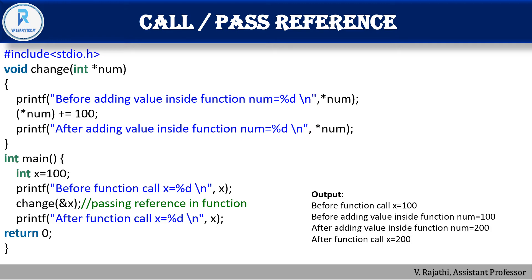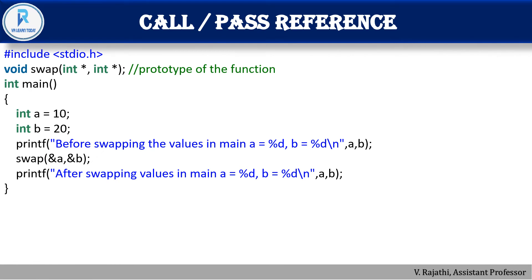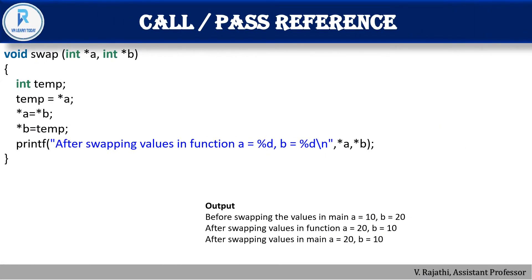Using the same swapping example for call by reference: a=10, b=20. After swapping inside the function, a becomes 20 and b becomes 10. When returning to main and printing, the output shows a=20 and b=10 — the values are modified. Because the variables share the same memory location, any modification in the function is reflected in the main function as well.